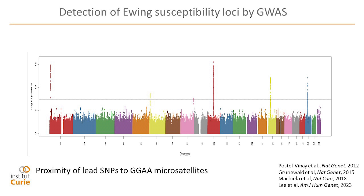This led us, about 10 years ago, to begin a genome-wide association study. There are very few Ewing sarcoma cases in families, so it's not a strong predisposition, but the epidemiological profile strongly suggests genetic predisposing factors. In a GWAS, you use hundreds of thousands of SNPs across the genome and compare their frequency in Ewing sarcoma patients versus a matched non-Ewing population, looking for differences. This leads to a Manhattan plot where you see that at some loci, the frequency is highly different between Ewing sarcoma patients and controls.